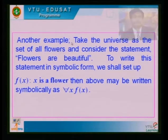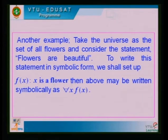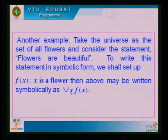Another example: take the universe as the set of all flowers and consider the statement 'flowers are beautiful'. We know that all flowers are not beautiful, but this is a general statement about the universe. To write this statement in symbolic form, we set F(x) as 'x is a flower'. Since 'flowers' implies all, we write it as ∀x F(x). This is the notation we use.